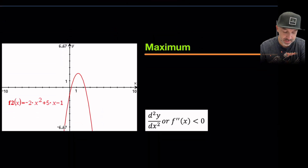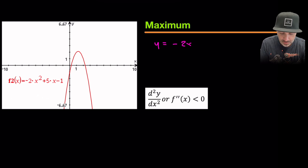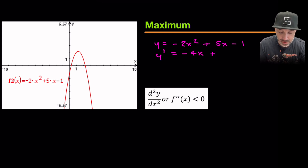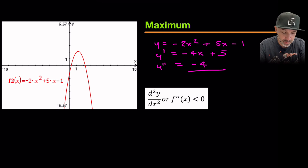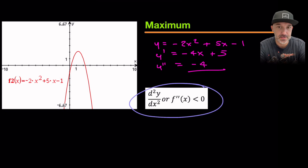Now for another example: y = -2x² + 5x - 1. Differentiating using the power rule gives -4x + 5, and differentiating again gives -4. That value stays as negative 4 — there's no variable x — so this is always negative. Therefore, the second derivative of this function is always less than zero.